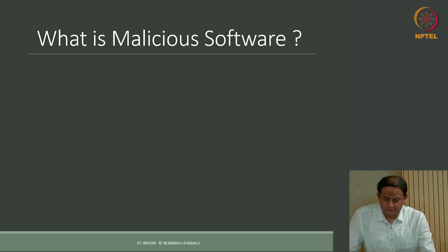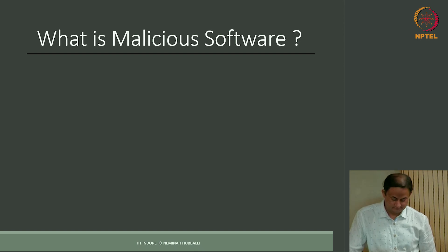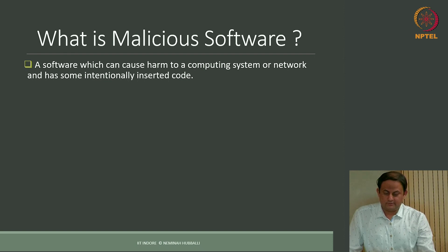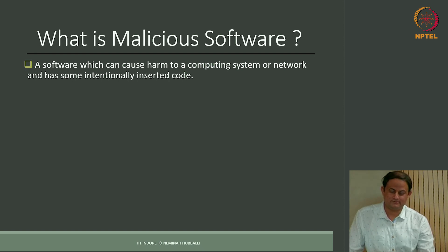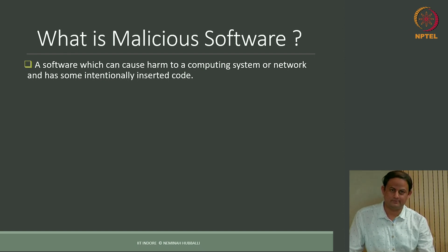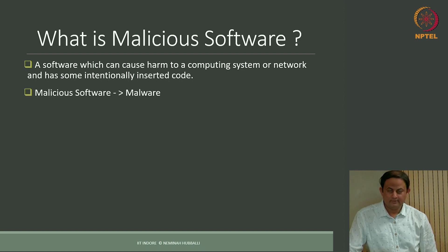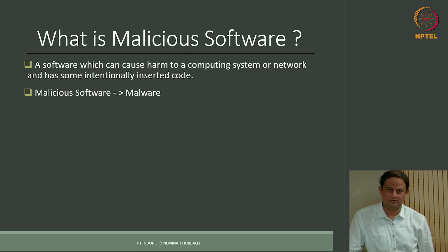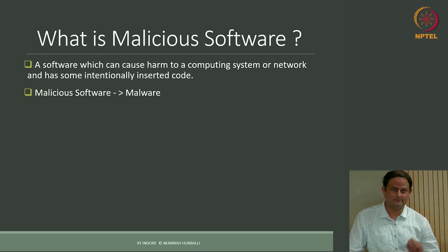We begin by asking: what is malicious software? What kind of software do we call malicious? Malicious software is, in simple terms, software that does malicious things on your system or network — it could be stealing your passwords or deleting some files. When any application does such things, that is called malicious software, or in short, malware. Malware is a very broad term — any time any application does something malicious, it is called malware.